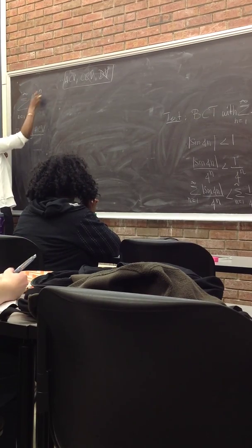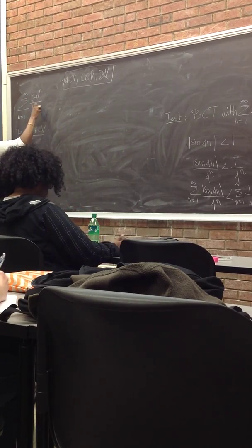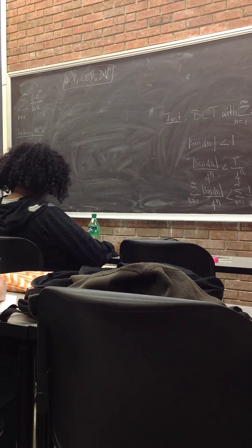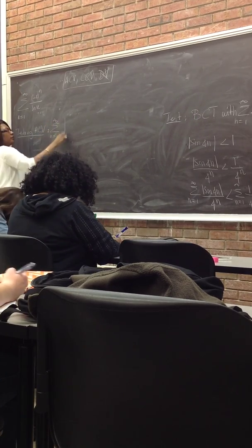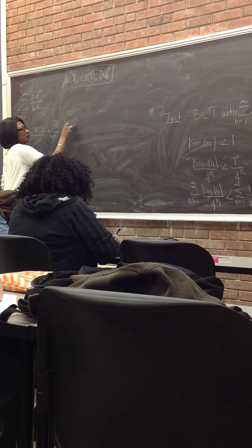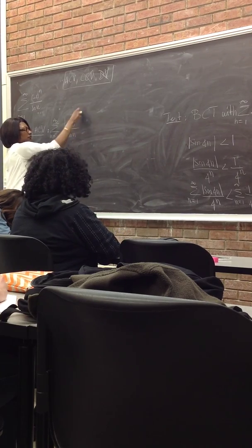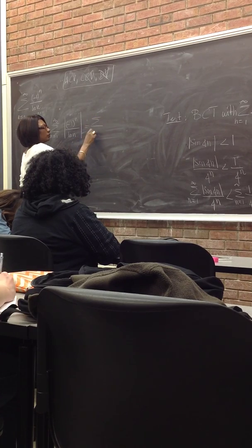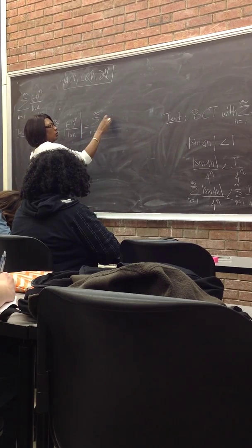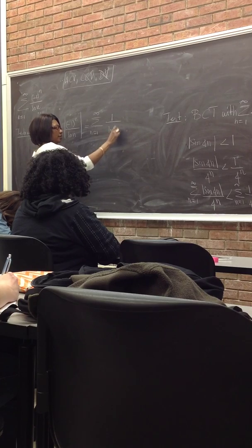1 to the n over the natural log of n. So again, we test ACV by taking the summation of the absolute value. So this simplifies to 1 over the natural log of n.